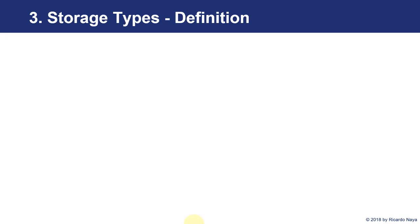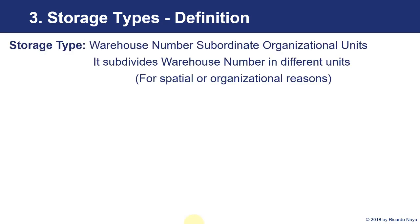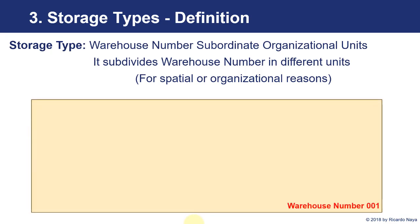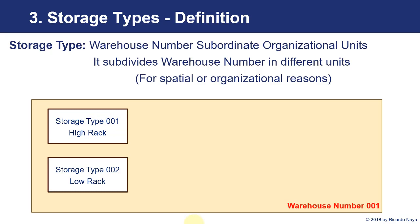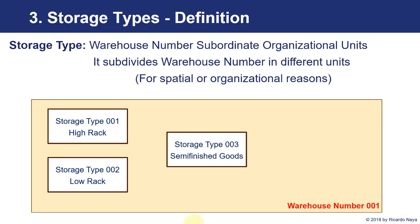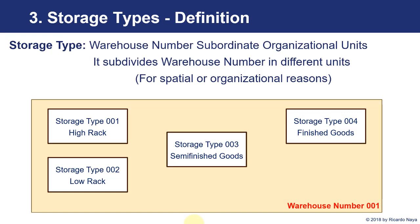Storage types, as we saw, are the different areas inside the warehouse number where we can store materials. They group these materials based on the location in our warehouse or based on some main characteristics. For instance, we can have a warehouse number 001, and here we can have a storage type for high rack, a storage type for low racks, a storage type for semi-finished goods, and another one for finished goods. This depends a lot on the business and how we want to model the warehouse.